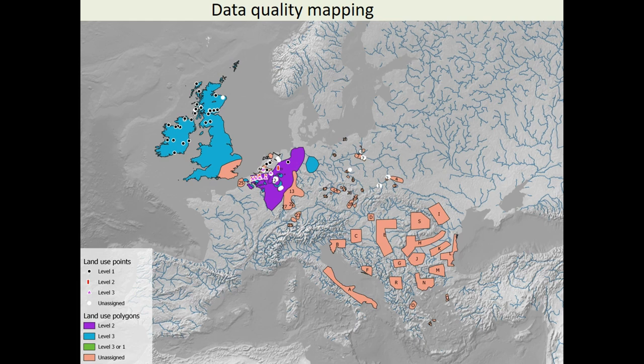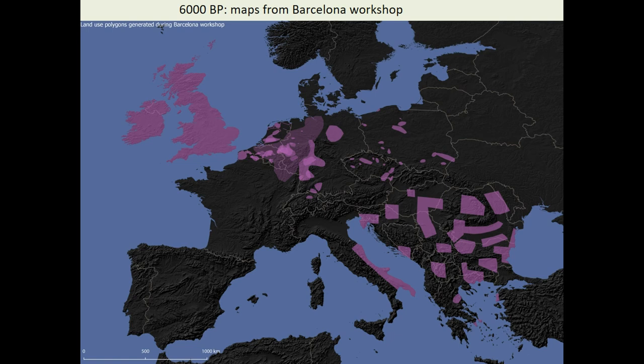We came back, got the maps scanned in, and this is what we got. We also mapped out different levels of data. We started to think: do we map when we know for sure there are people here and they're dated, or do we map where we've got settlement sites but no archaeobotany? How do we distinguish between those levels of information? Here is the land use map done at level one category — you'll notice there's apparently nobody in Spain; that's because the Spanish group hadn't finished their work. This is what it looks like — already starting to show different categories.